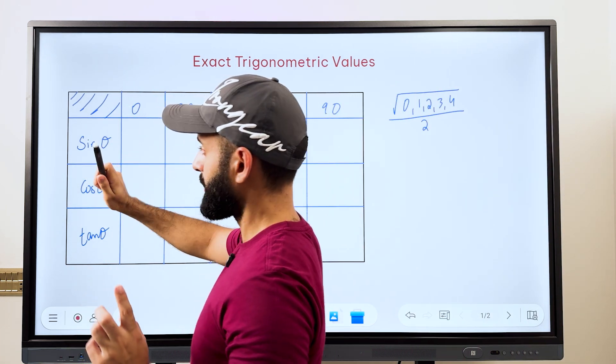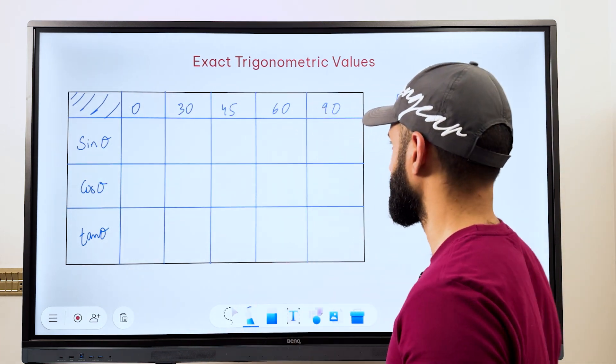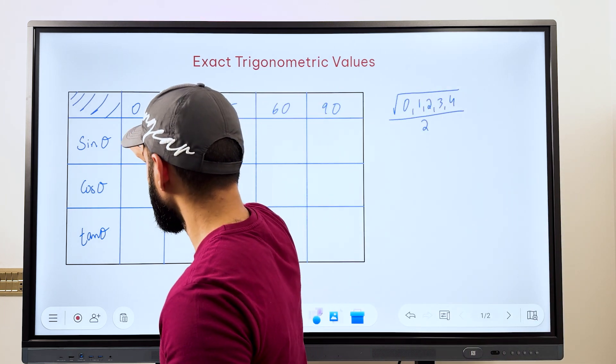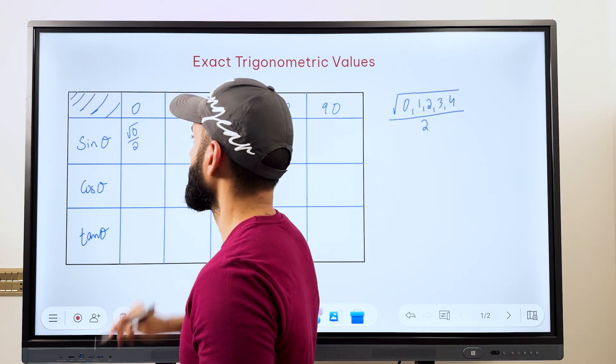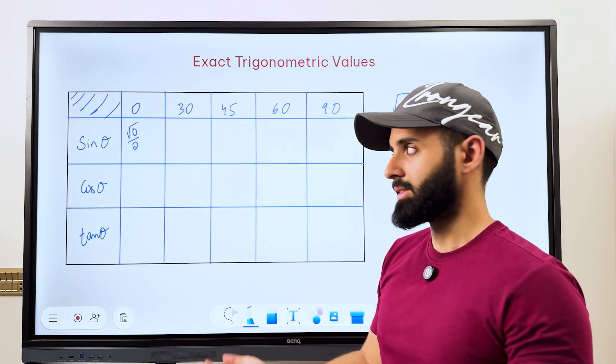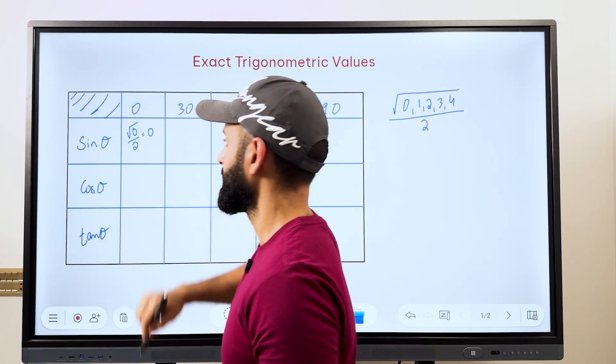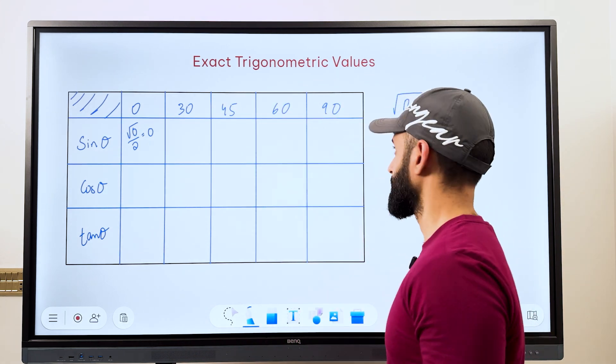So 0 is the first value and we want to calculate sin of 0. So what you do is you pick the first value from the square root which is 0, you take the square root of it and you divide by 2. Now what's square root 0? We all know that's 0, 0 divided by 2 is also 0. So there you go, sin 0 is 0, simple as that.